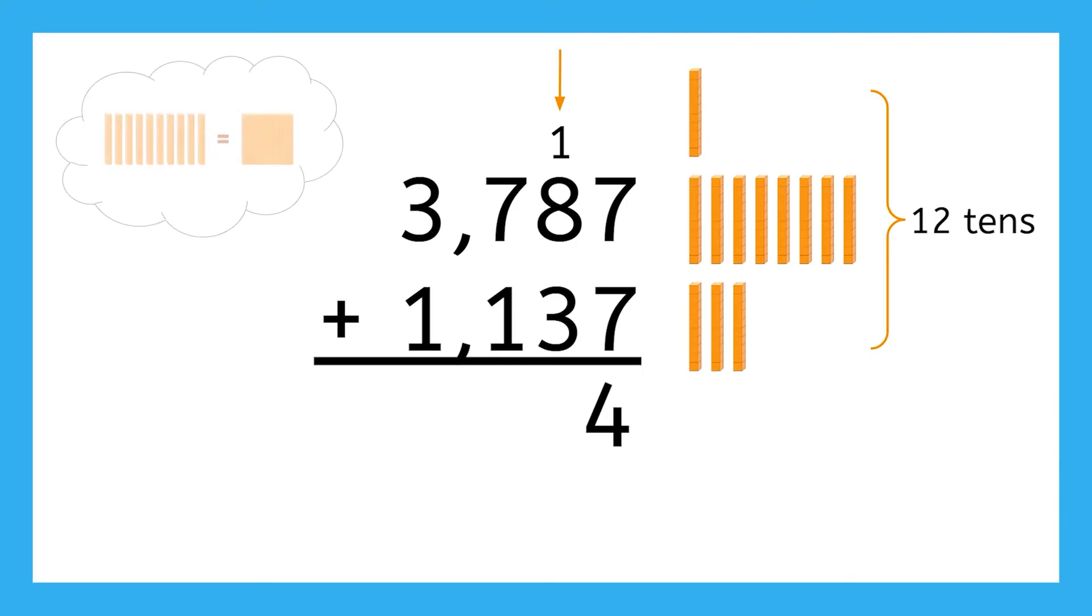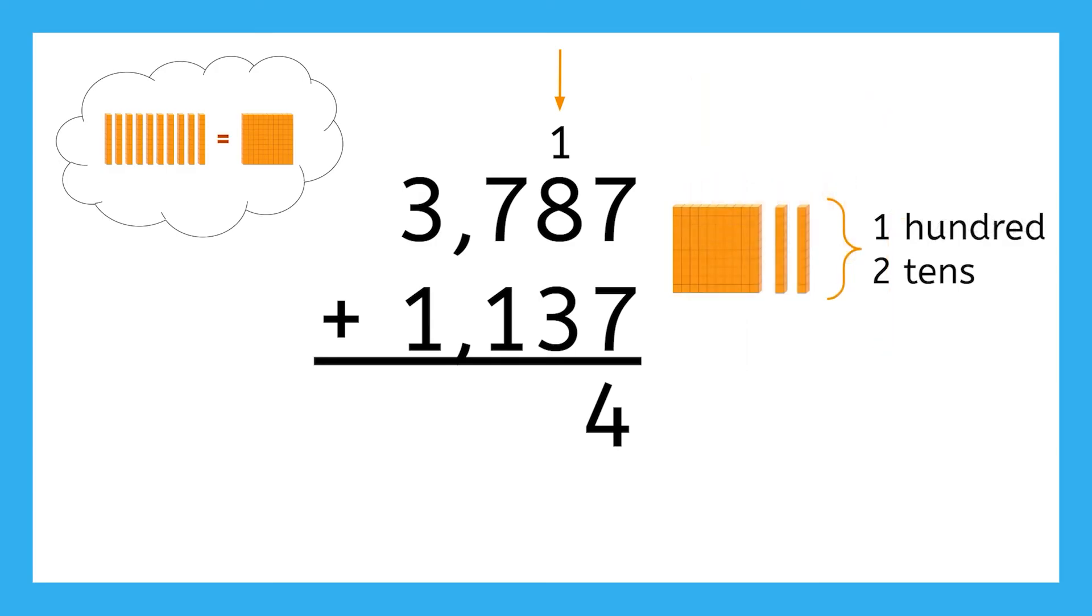Remember, ten tens is the same as one hundred, which means our twelve tens can be regrouped as one hundred and two tens. Let's take that one hundred and put it with our other hundreds. That leaves us with two tens, or the digit two, to record in the tens place of our answer.